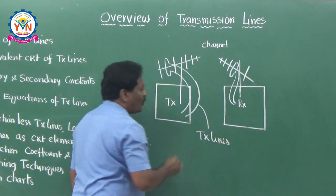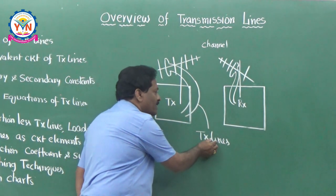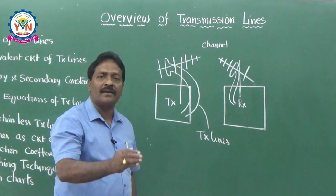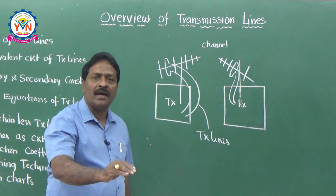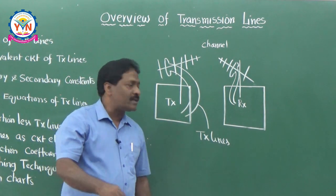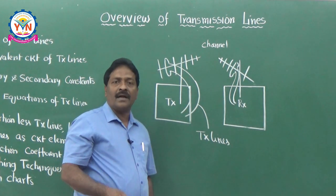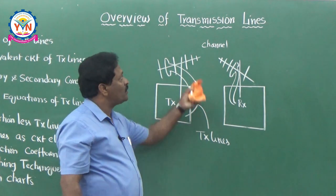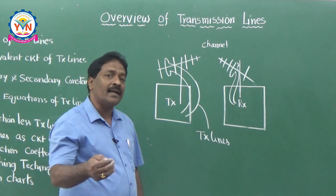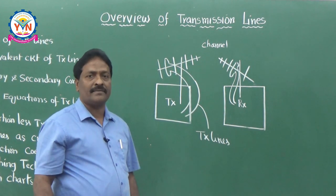I am talking about transmission lines from an EC point of view, meaning signal transmission from one place to the other. When you consider electrical engineering, these transmission lines are meant for guiding electrical energy — that is, power lines.